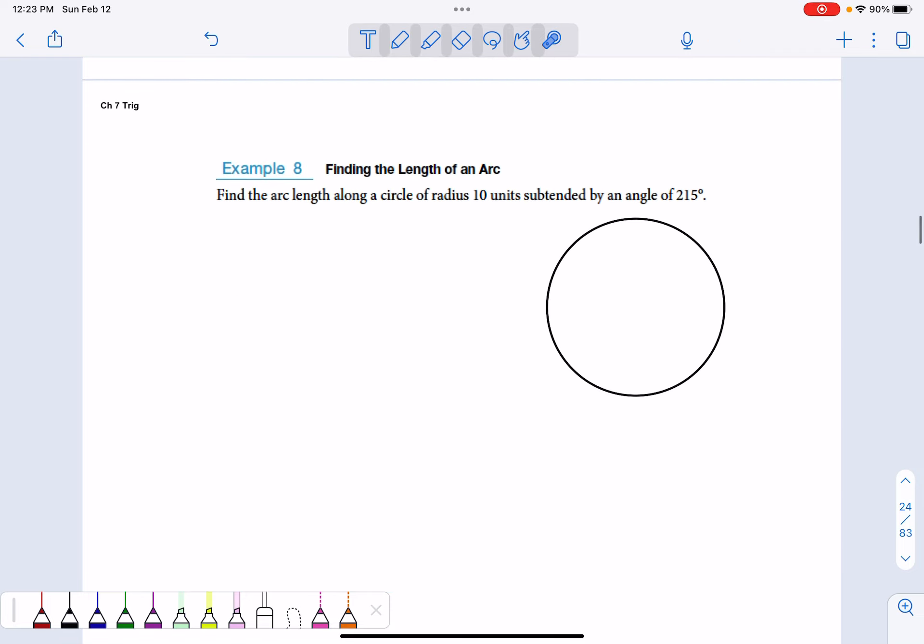Let's use the formula to find the arc length of a circle with radius 10 and angle of 215 degrees. S equals R theta. We know R is 10, we know theta has to be converted, so we're going to tack on a pi and put it over 180 to make sure it's in radians.